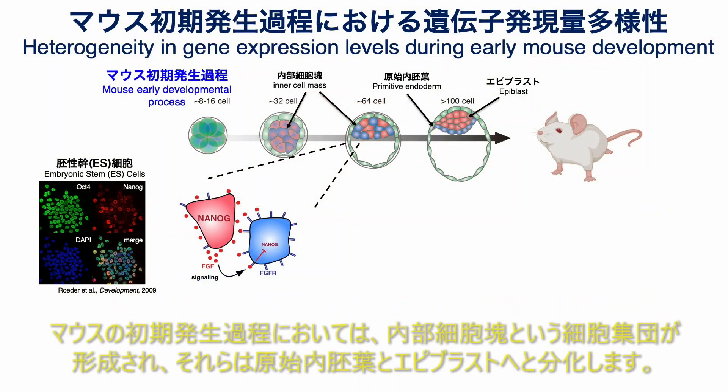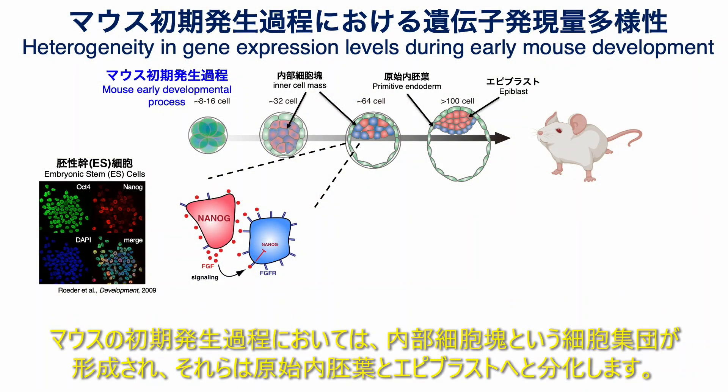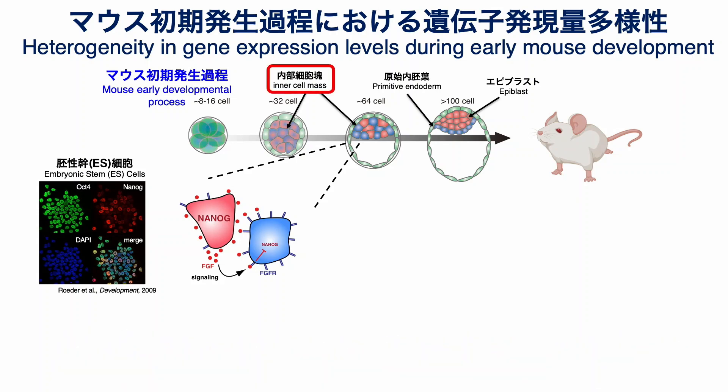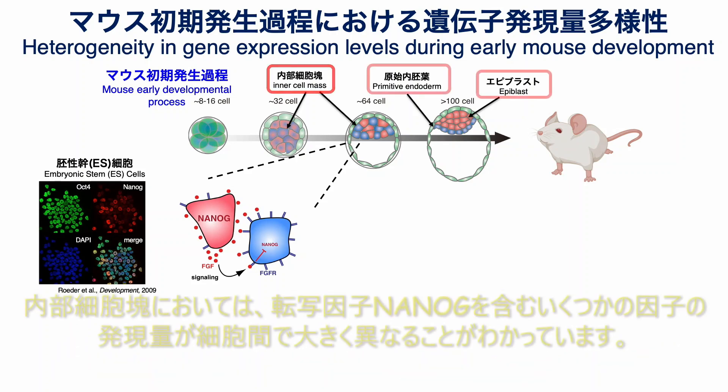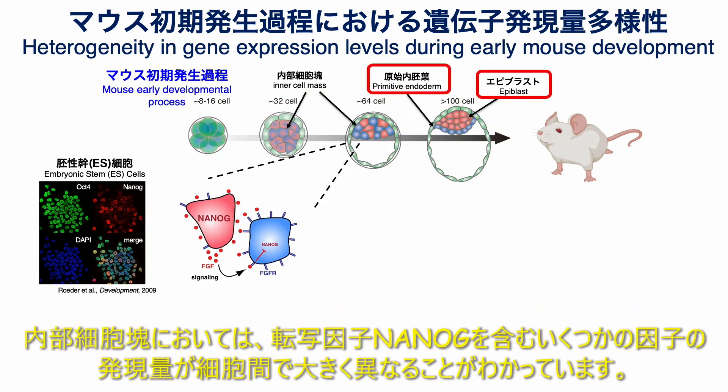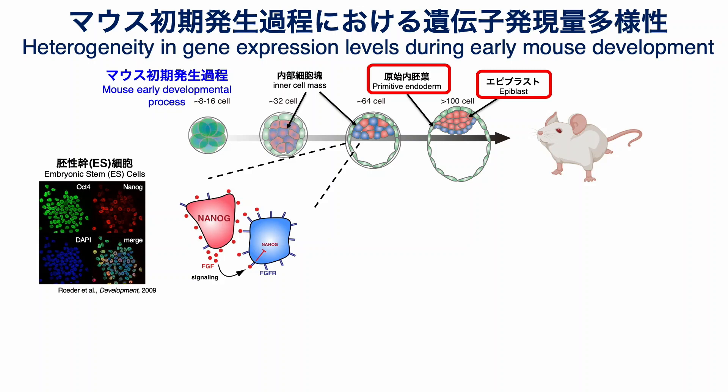In the early developmental stages of a mouse, a cellular aggregate called the inner cell mass forms, which differentiates into the primitive endoderm and epiblast. Within the inner cell mass, the expression levels of several factors, including the transcription factor Nanog, significantly vary between cells.